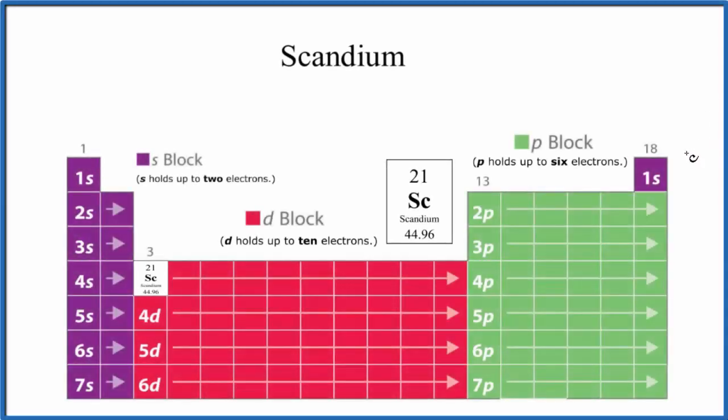In this video we'll write the electron configuration for Sc, that's scandium. The first thing we note when we look at the periodic table: scandium is a neutral element, doesn't have a negative or positive sign. So we can look at the atomic number here, this is the number of protons. Since it's neutral, that'll equal the number of electrons.